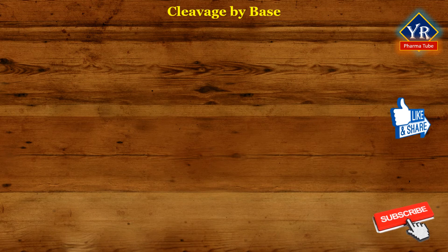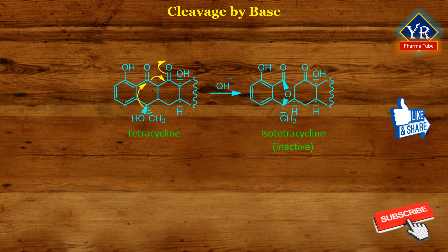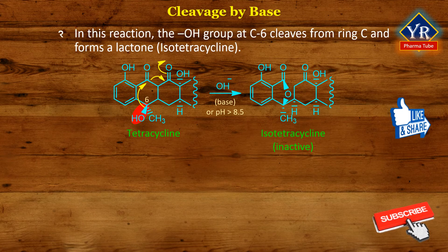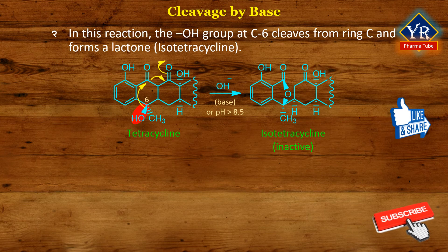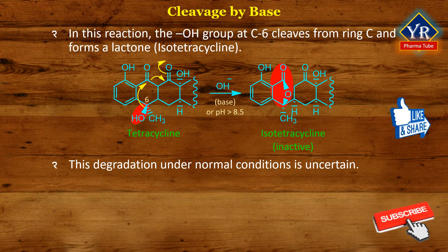Cleavage in base, or degradation of tetracycline in the presence of base. Tetracyclines having a hydroxyl group at C6 undergo degradation in the presence of alkali at or above pH 8.5. During this reaction, the hydroxyl group of tetracycline at C6 cleaves from ring C and forms a lactone ring named isotetracycline, which is an inactive compound. The clinical impact of this degradation under normal conditions is uncertain.